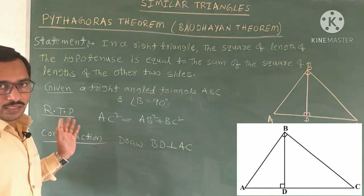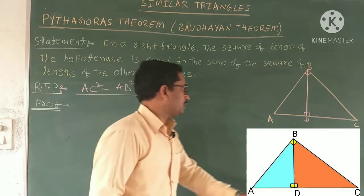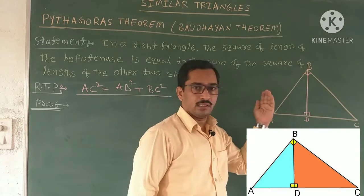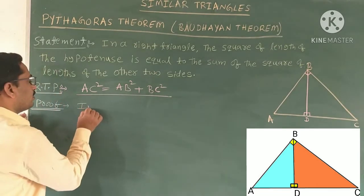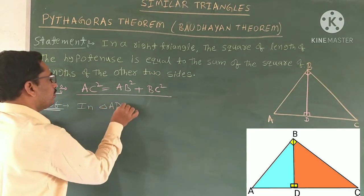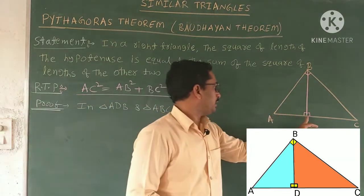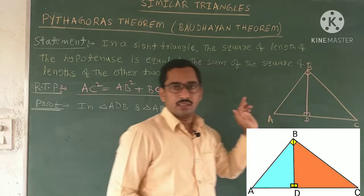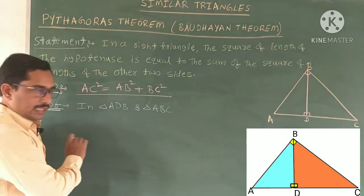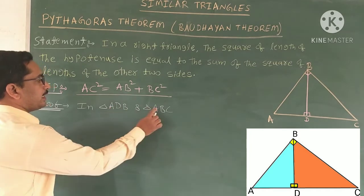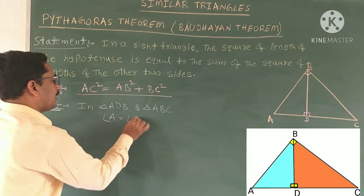Now we have the given data, RTP, and construction. See the proof. Select the triangles — I am selecting triangle ADB, the left side triangle, and the complete whole triangle ABC. I am going to prove these two triangles are similar. If you observe the triangles, angle A is the same in both — it is a common angle.